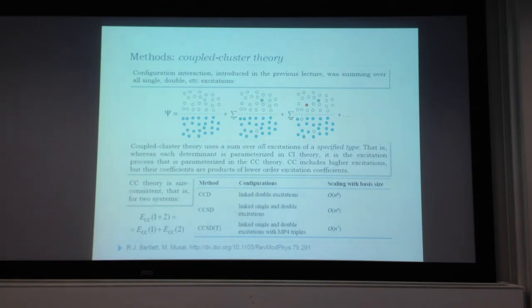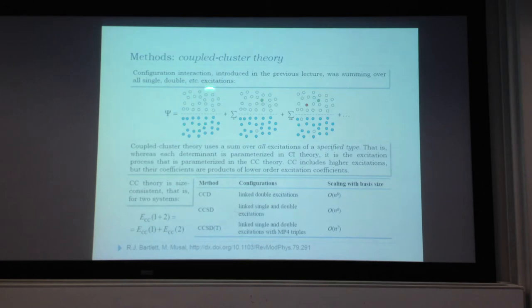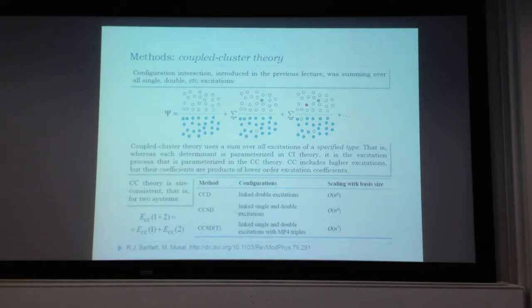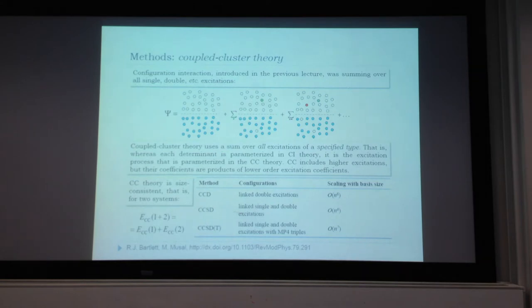What we need to do is introduce excitations with variable coefficients. If this is the Hartree-Fock reference state, with populated and vacant spin orbitals, then configuration interaction amounts to promoting one, two, or more electrons from an occupied orbital to a vacant orbital, and then varying these coefficients to minimize the overall energy.